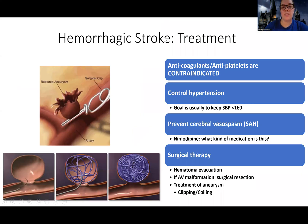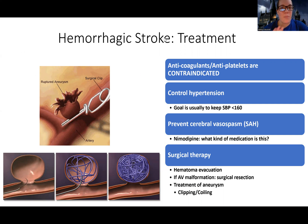That covers ischemic stroke therapy and treatments. Next we'll get into hemorrhagic stroke. Ischemic stroke treatments are more complicated — TPA is a lot to take in — but hopefully it was presented in a semi-organized way. Hemorrhagic stroke treatment is simpler, so see you for that one.